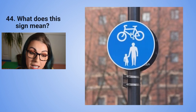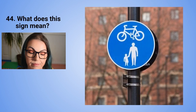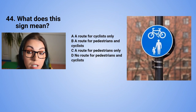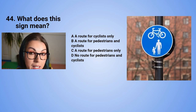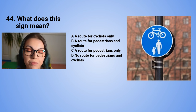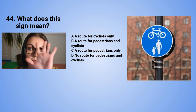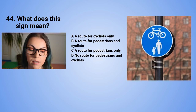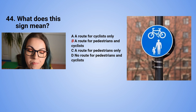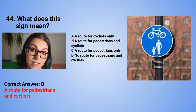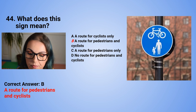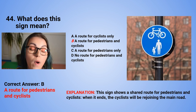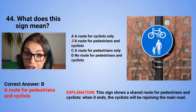Question 44: What does this sign mean? A. A route for cyclists only. B. A route for pedestrians and cyclists. C. A route for pedestrians only. Or D. No route for pedestrians and cyclists. The correct answer is B — a route for pedestrians and cyclists. This sign shows a shared route for pedestrians and cyclists. When it ends, cyclists will be rejoining the main road.